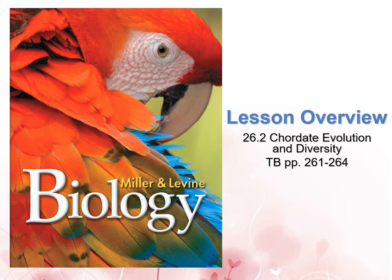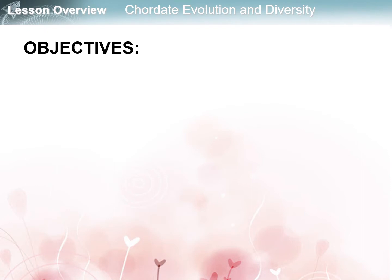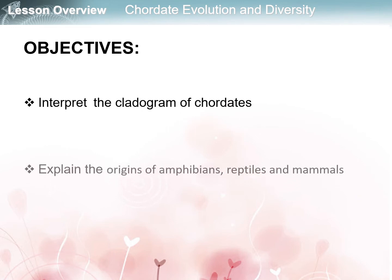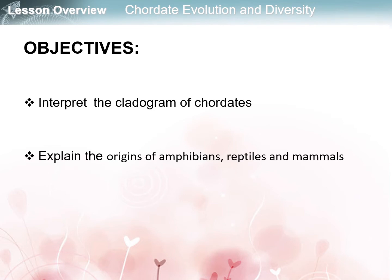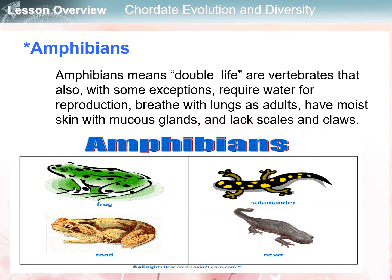This video is about Chapter 26, Lesson 2: Chordate Evolution and Diversity, pages 261 to 264 in your textbook. Our objectives are to interpret the cladogram of chordates and explain the origins of amphibians, reptiles, and mammals.